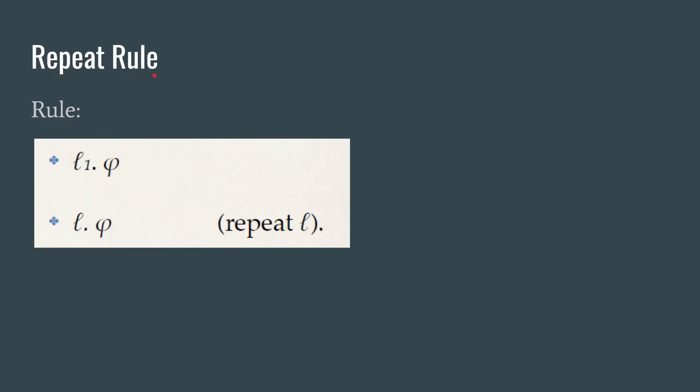First for today we have the repeat rule. This doesn't come up very often but you will see it occasionally and it is actually necessary in order to carry out some of the proofs we would want to carry out. Basically the idea is if you have φ on line ℓ₁ then you can just write φ again on line ℓ. Now when applying this rule the only thing to keep in mind is that you have to stay out of closed boxes.